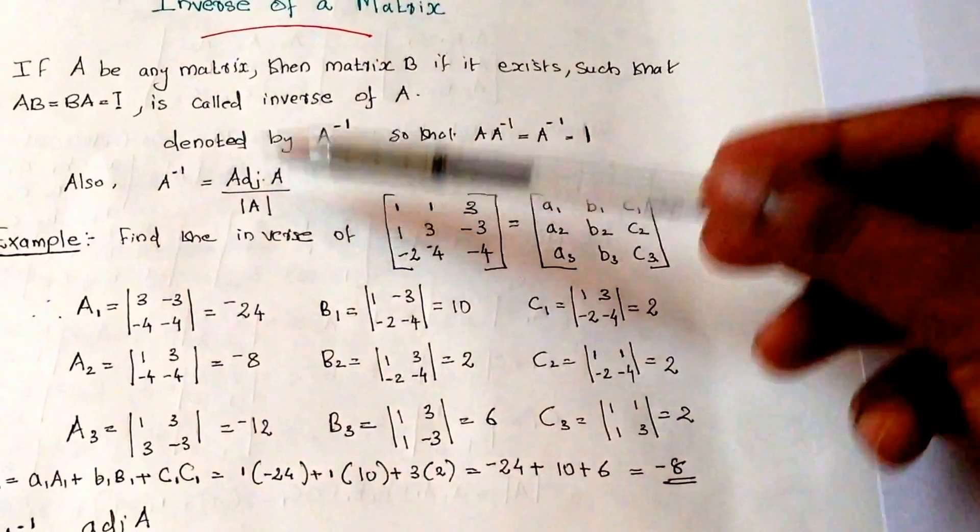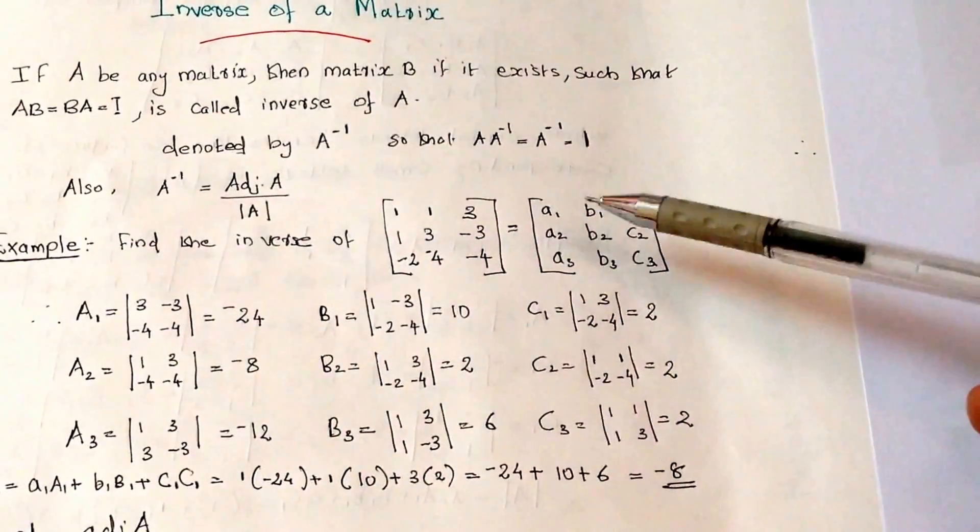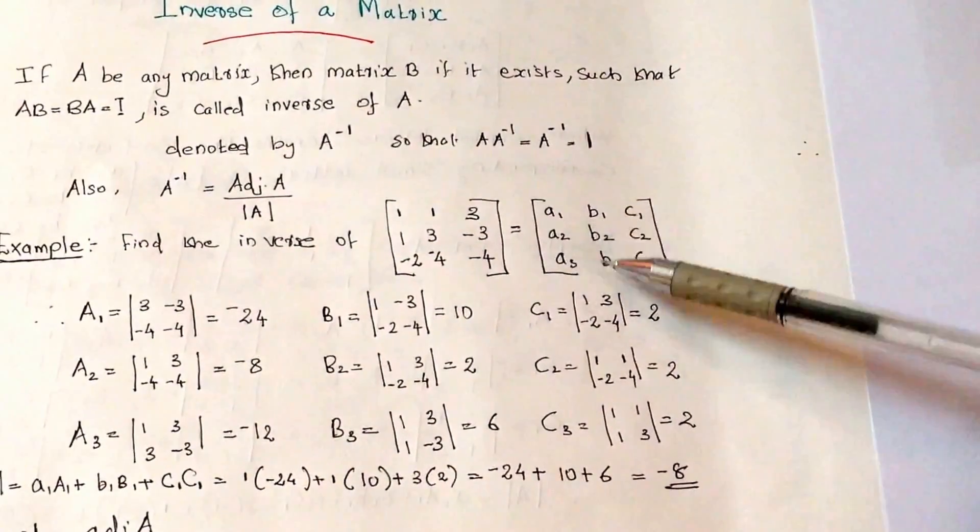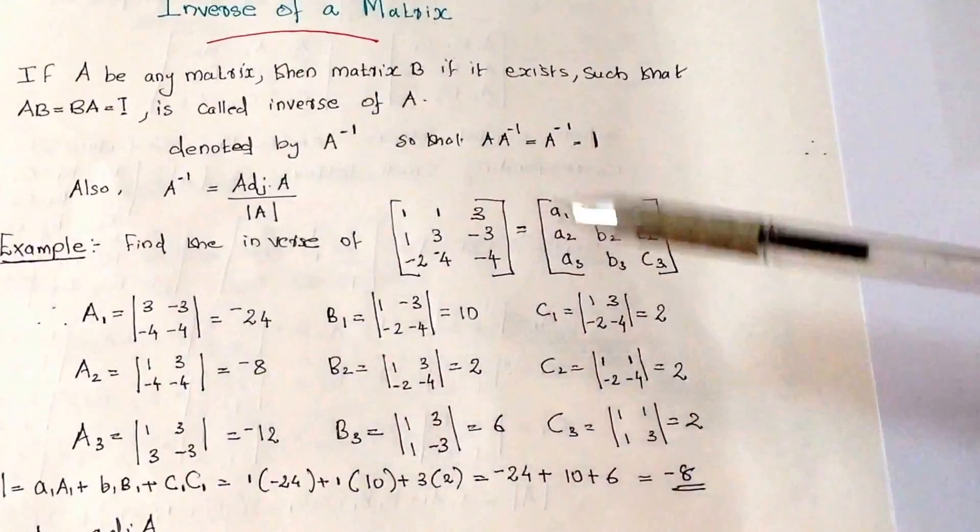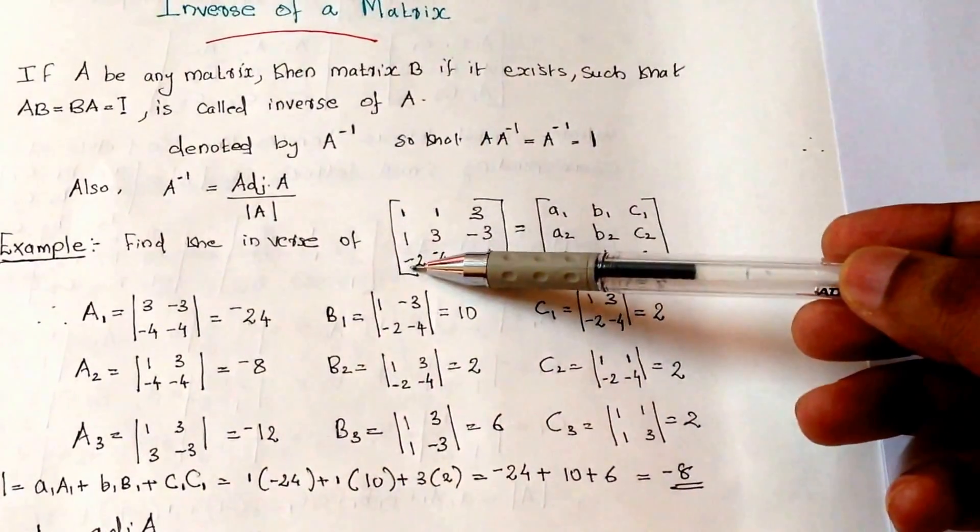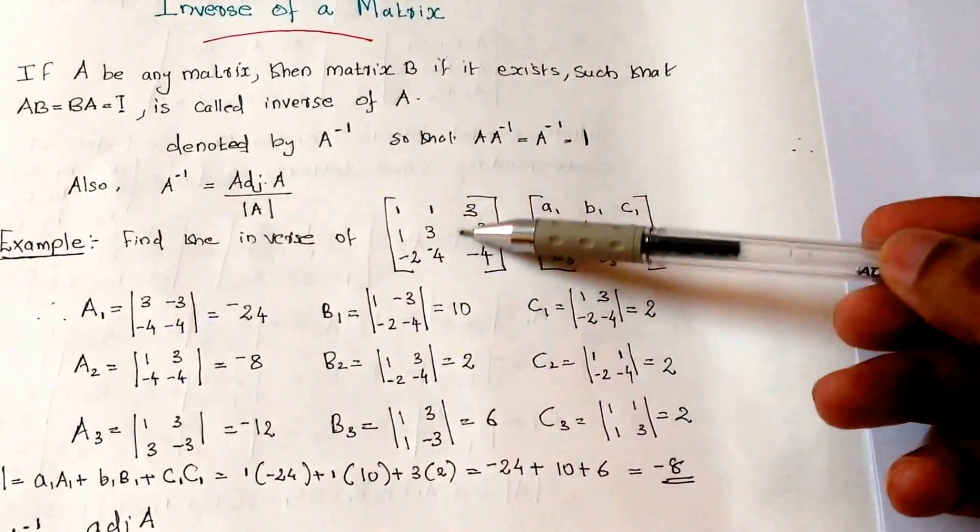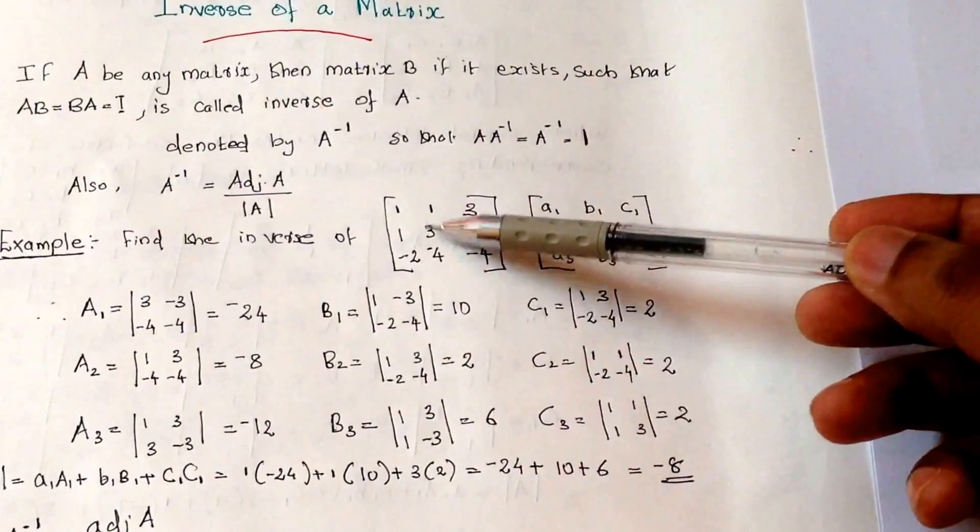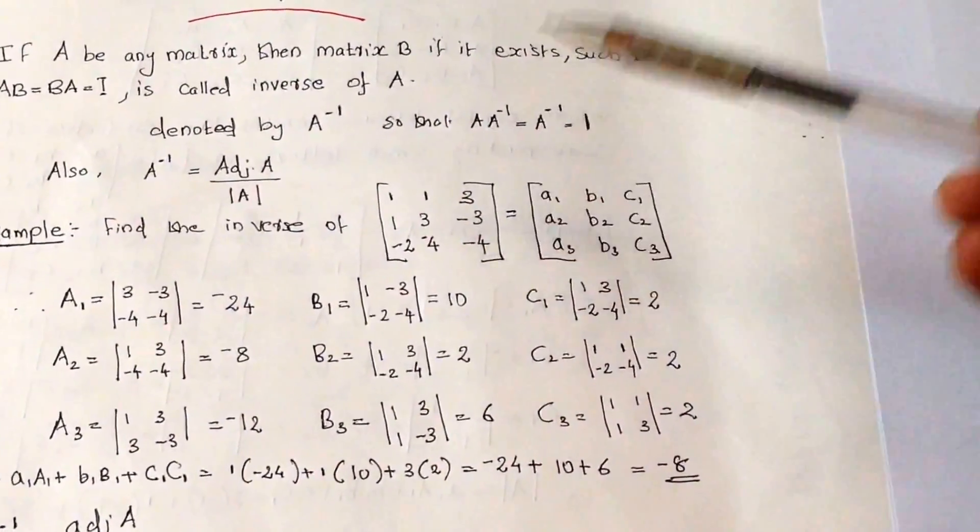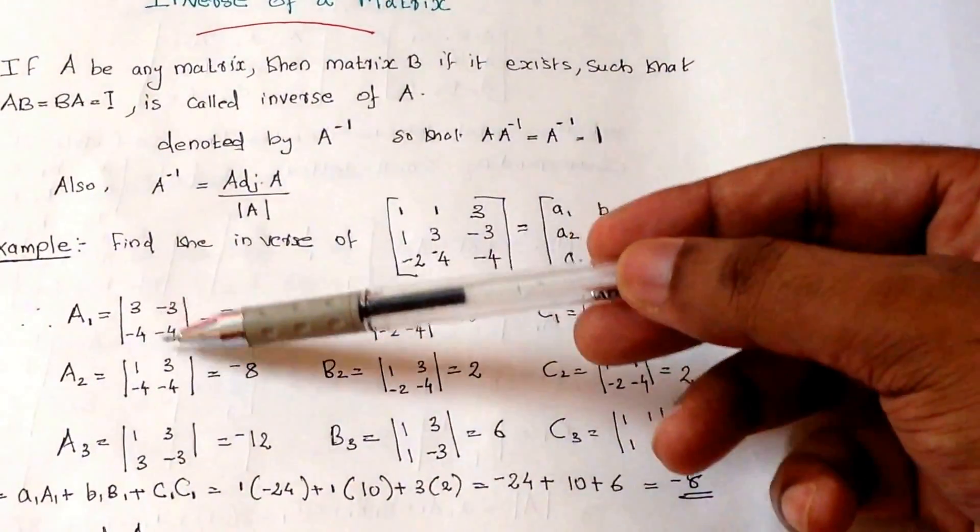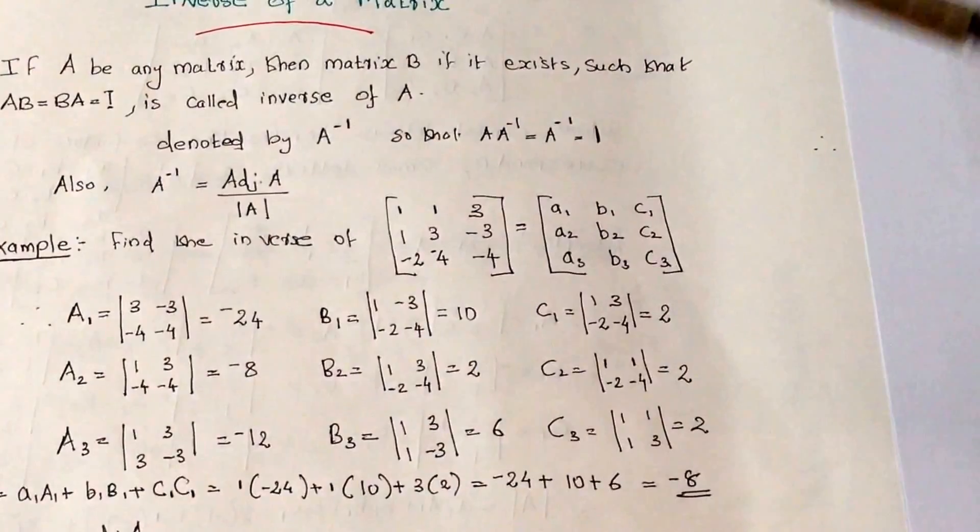What is the first step? We have to find the adjoint of A. We have to find the cofactors of these values like capital A1. For 1, this row and this column will be ignored. Then what is left? 3, minus 4, minus 3, minus 4.